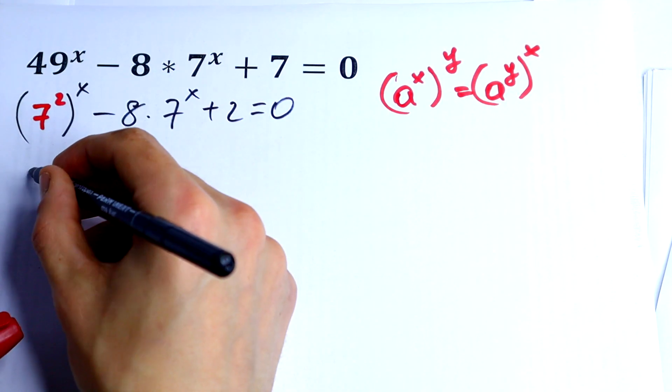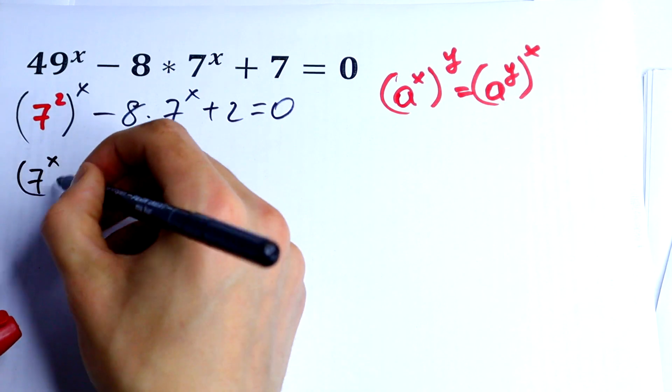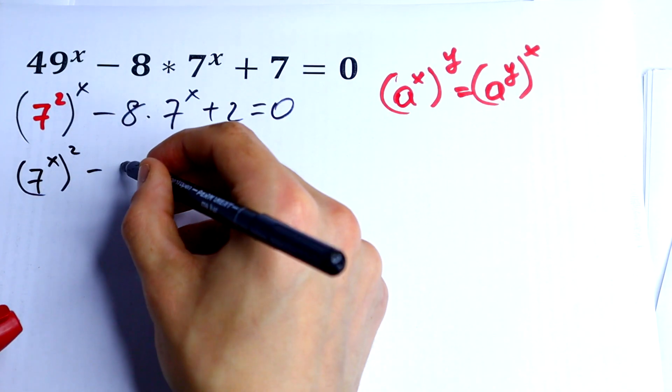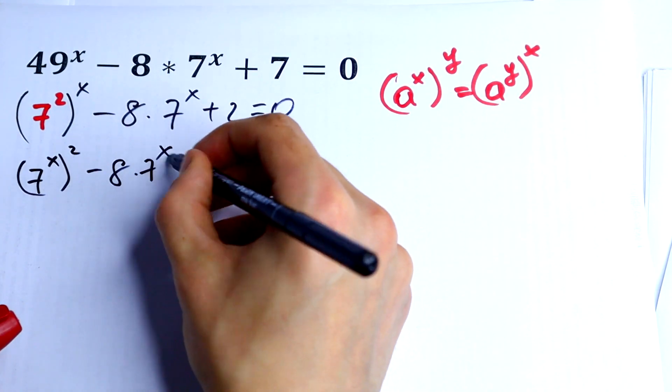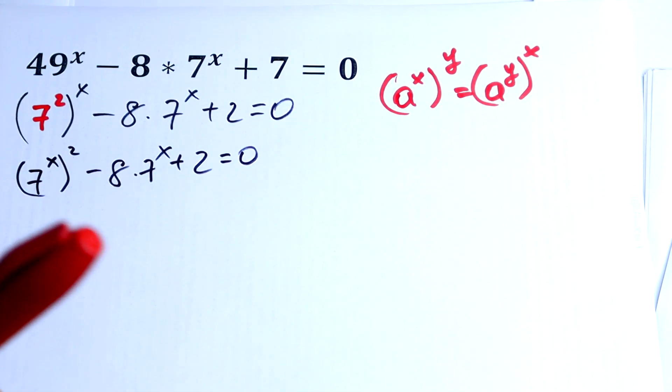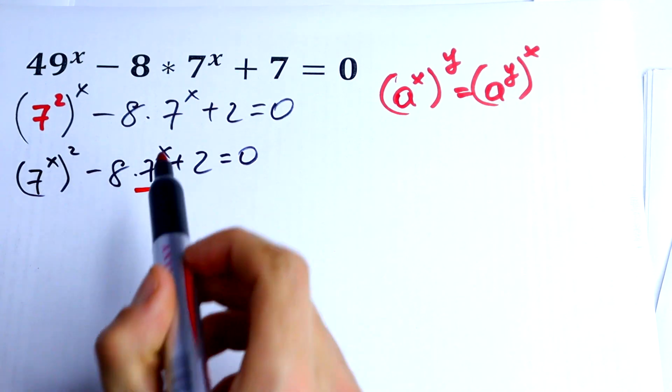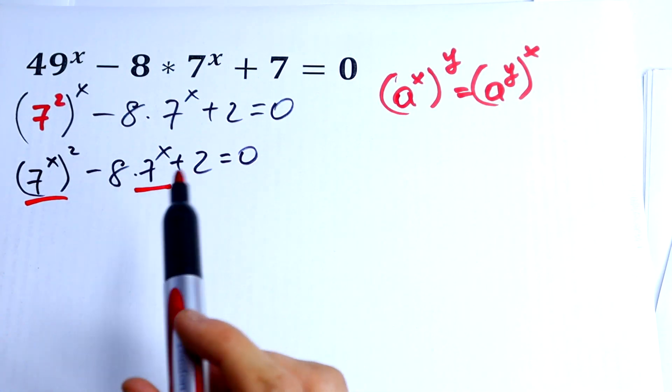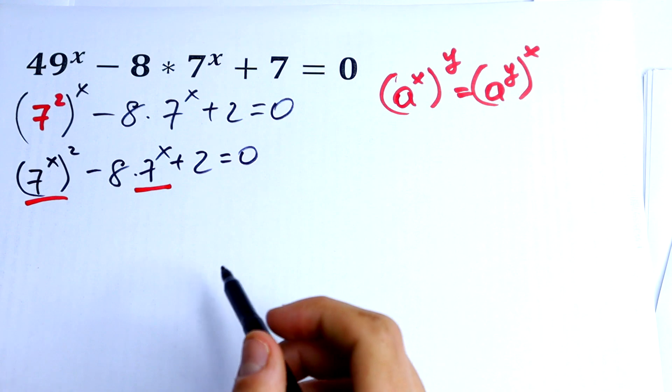I can swap this x right here and 2 right here. So I will get 7 to the power x squared minus 8 times 7 to the power x plus 2 equal to 0. Now I see that I have 7 to the power x right here and right here, so I can use a substitution.